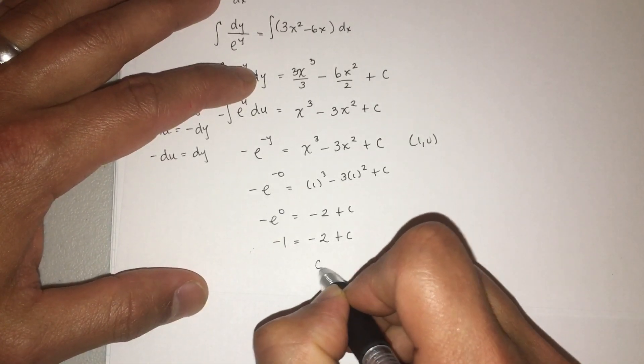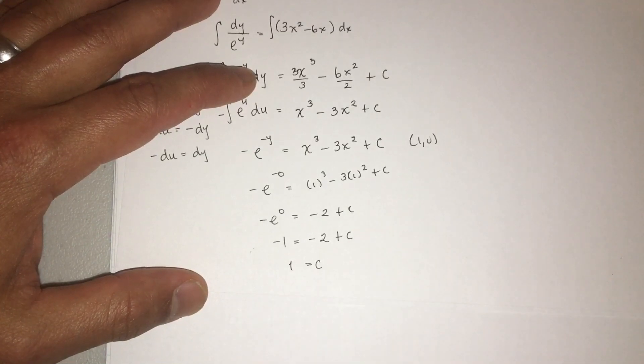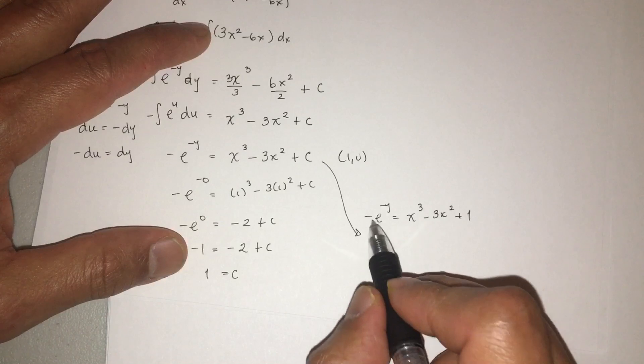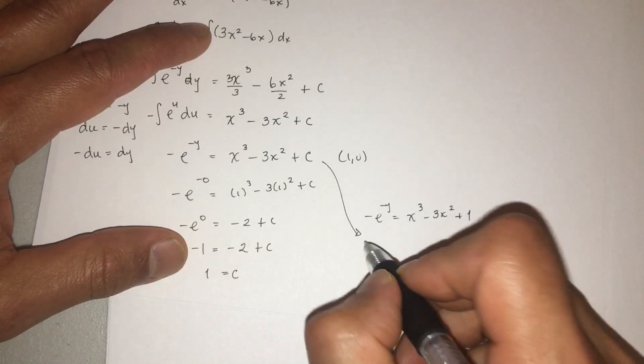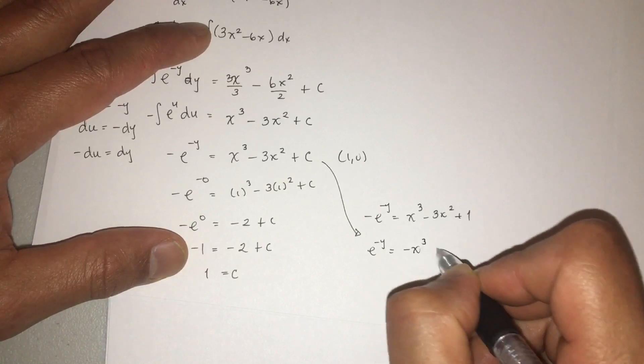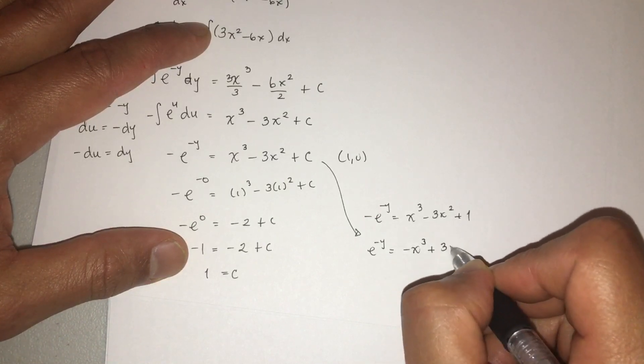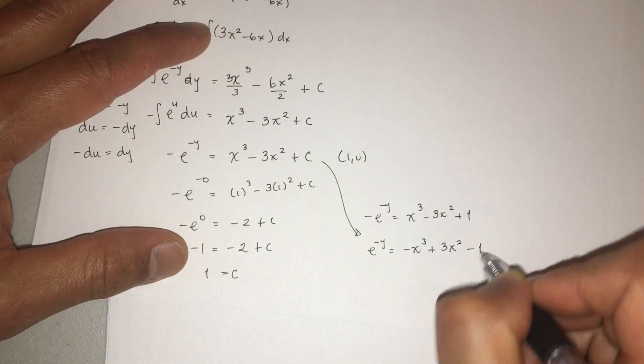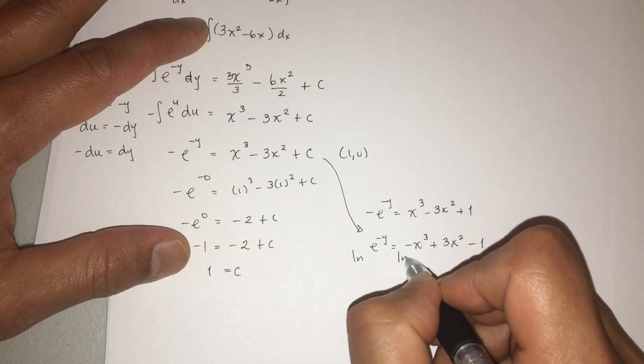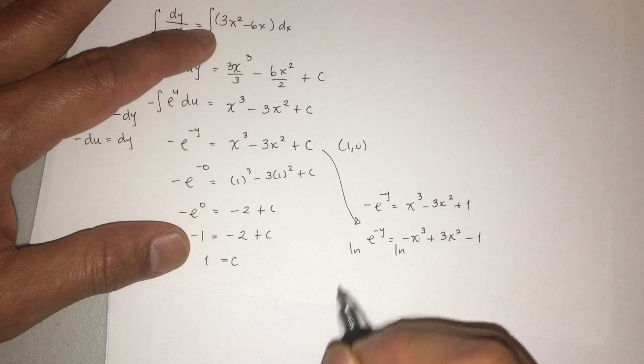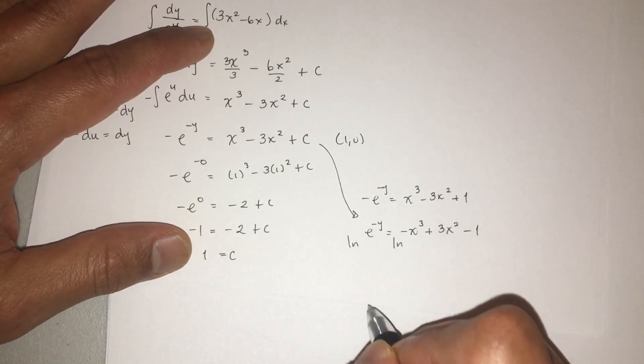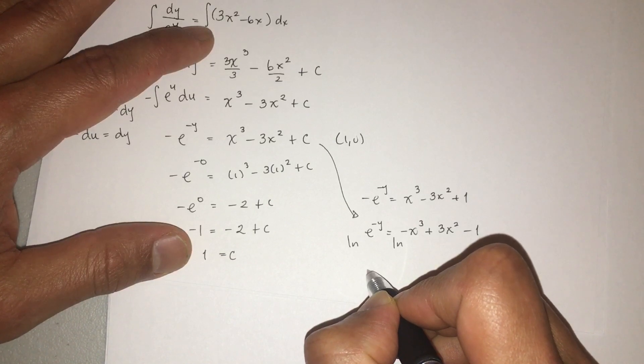Remember, just take your time. Don't feel rushed. And then go from here. We want to go ahead and find c. Try to find c as soon as you can. That way, you just kind of get rid of it. So we want to use the point (1,0). When x is 1, y is 0. So we're going to -e^0. 0 is neither negative or positive. So that should just be 0. So let me write it. -e^0. And then x is 1. So we get 1^3 - 3(1)^2 + c.